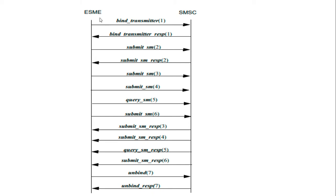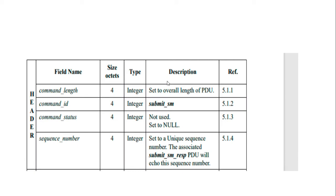Just a recap of how submit_sm works: basically, the ESME binds with the SMSC, then it sends a submit_sm, and this submit_sm submits the SMS to the mobile station. Check my earlier videos for full details. Now let's look at the format of submit_sm and its various parameters. The first field is the command length, then the command ID.